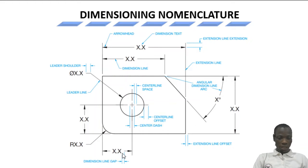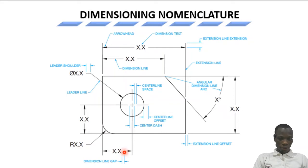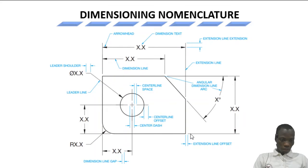Then we have the dimension line gap — that space between the dimension line and the text. You discontinue the dimension line, place the text, and the distance between the dimension line and the text is the gap. We also have the extension line offset — that distance between the object line and the dimension line. There should be a small offset; the dimension line should not touch the object line, as that may bring confusion.